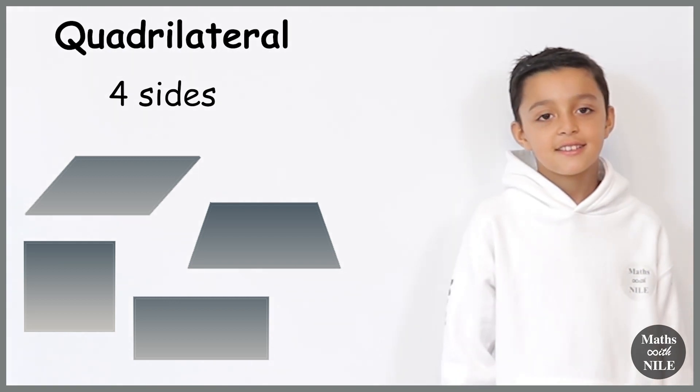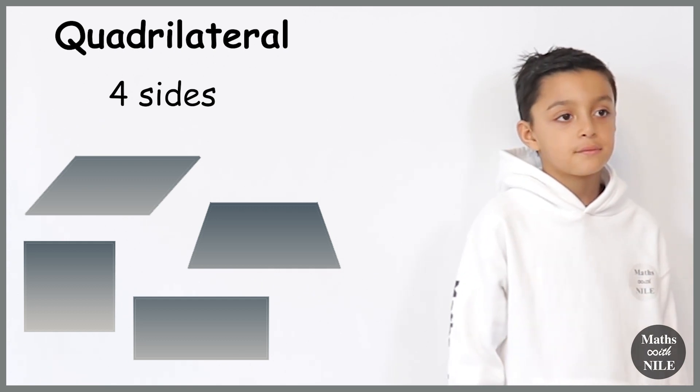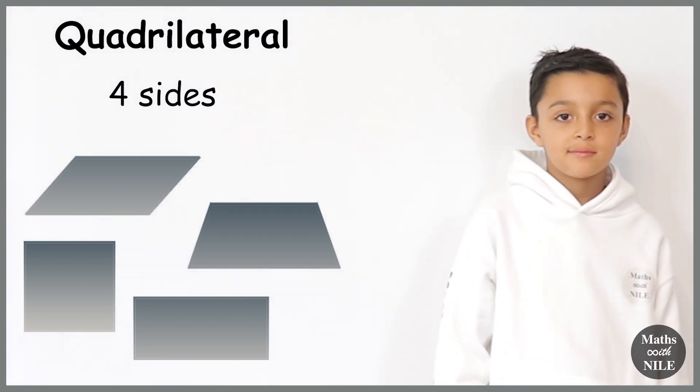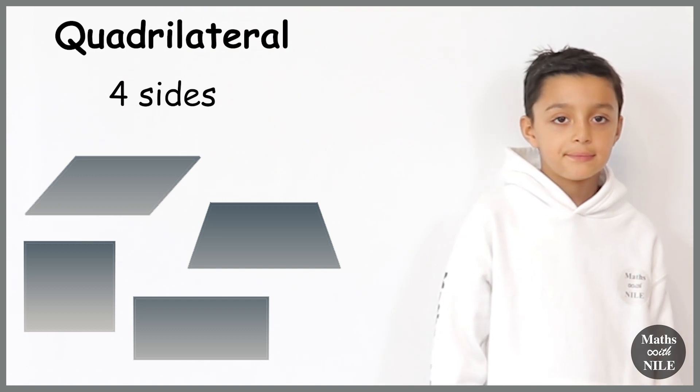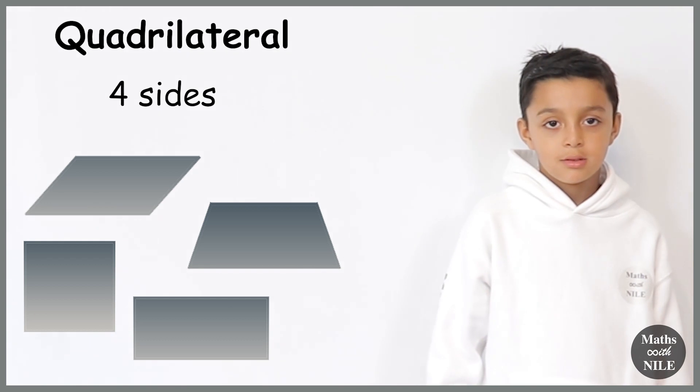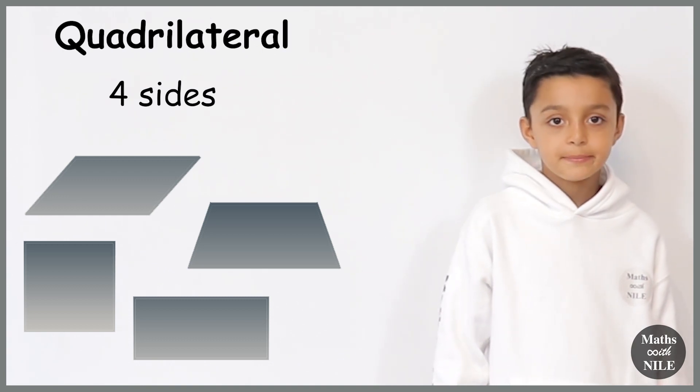And if I asked a shape with four sides, what kind of answers would I normally get from students? A square, a rectangle. Okay, so there are different shapes that have four sides and there's one word to describe all of these four-sided shapes. Can you repeat what that word is? Quadrilateral.